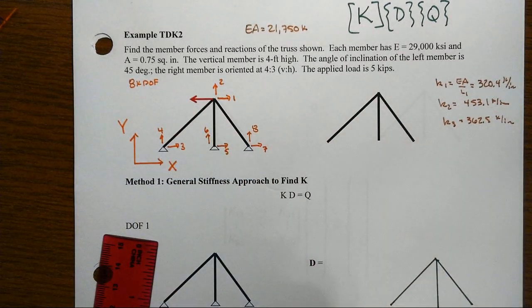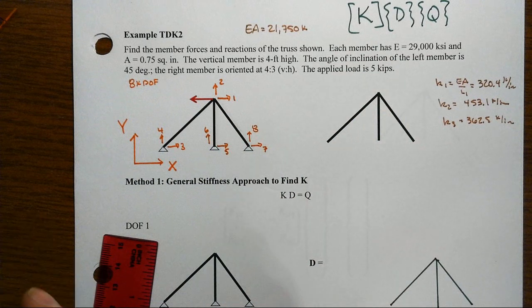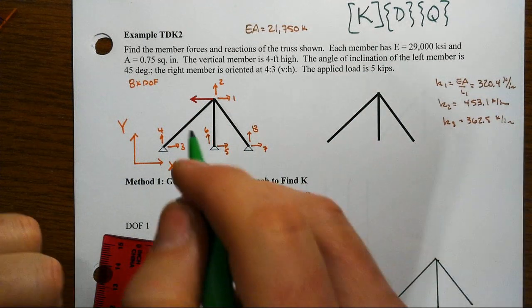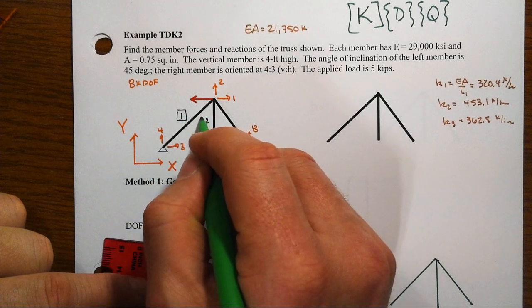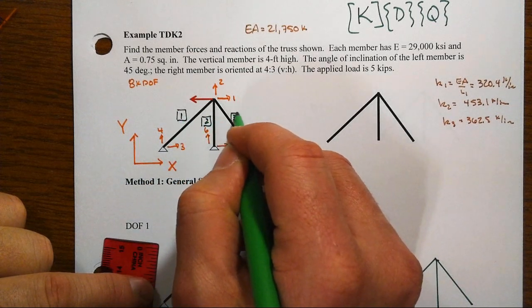And then let's get some labels in here for other things, such as we've got three members. There's member one, member two, and member three.